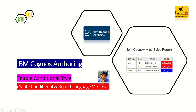Before we get into the demo, let us understand the background — why do we need this exercise. Suppose you have a report called Countrywise Sales Report having four columns: country, state, email, and sales. You have a requirement where the sales KPI should be shown dynamically based on the value range — highlight the cell background red for anything above 10 lakh, and blue for anything equal to or below 10 lakh. Second, how do you change your report title based on the language selection in Cognos connection? These are the two things we are going to see in detail.